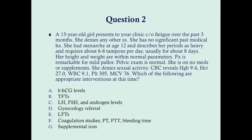Question two: a 15-year-old girl presents to your clinic complaining of fatigue over the past three months. She denies any other symptoms and has no significant past medical history. She had menarche at age 12 and describes her periods as heavy, requiring about six to eight tampons per day for about eight days. Her height and weight are within normal parameters. Physical exam is remarkable for mild pallor; pelvic exam is normal. She's on no medications or supplements and denies sexual activity. CBC reveals hemoglobin 9.4, hematocrit 27, white count 9.1, platelets 305, MCV 76. Which of the following are appropriate interventions at this time — choose all that apply?